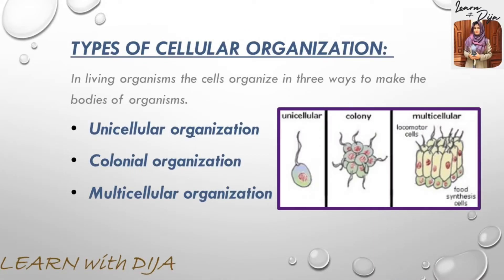Types of cellular organization: in living things, cells are organized in different ways — that may be unicellular, colonial, and multicellular. These arrangements of cells make the body of organisms.